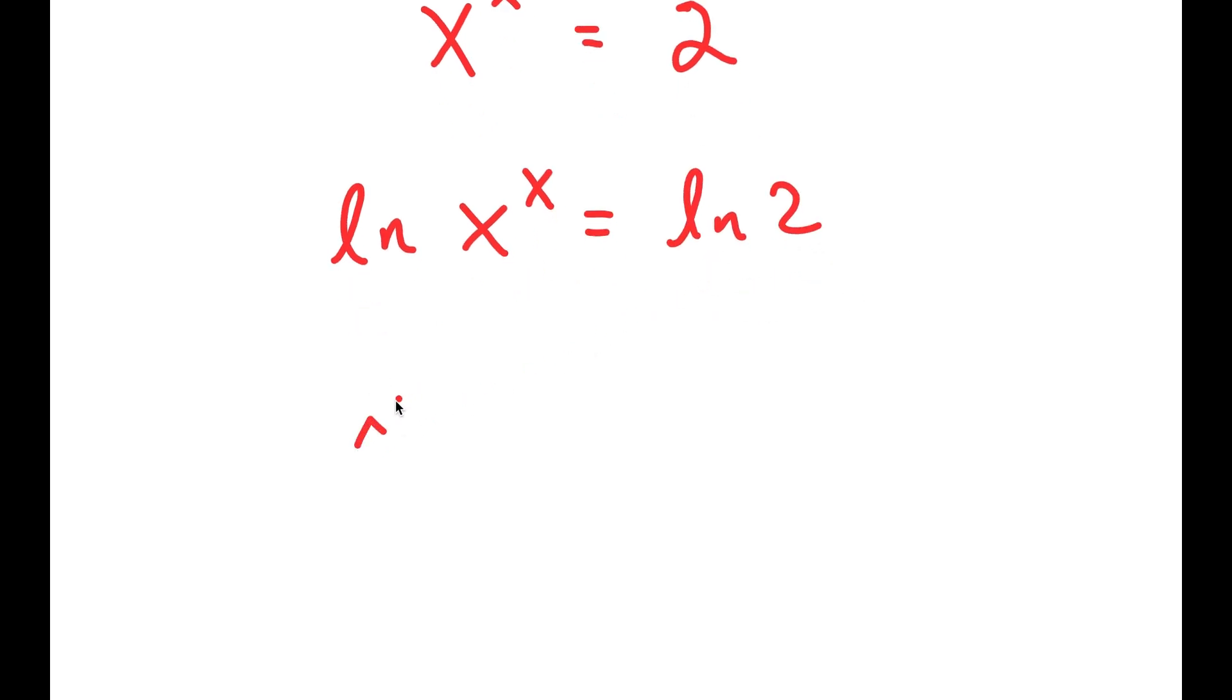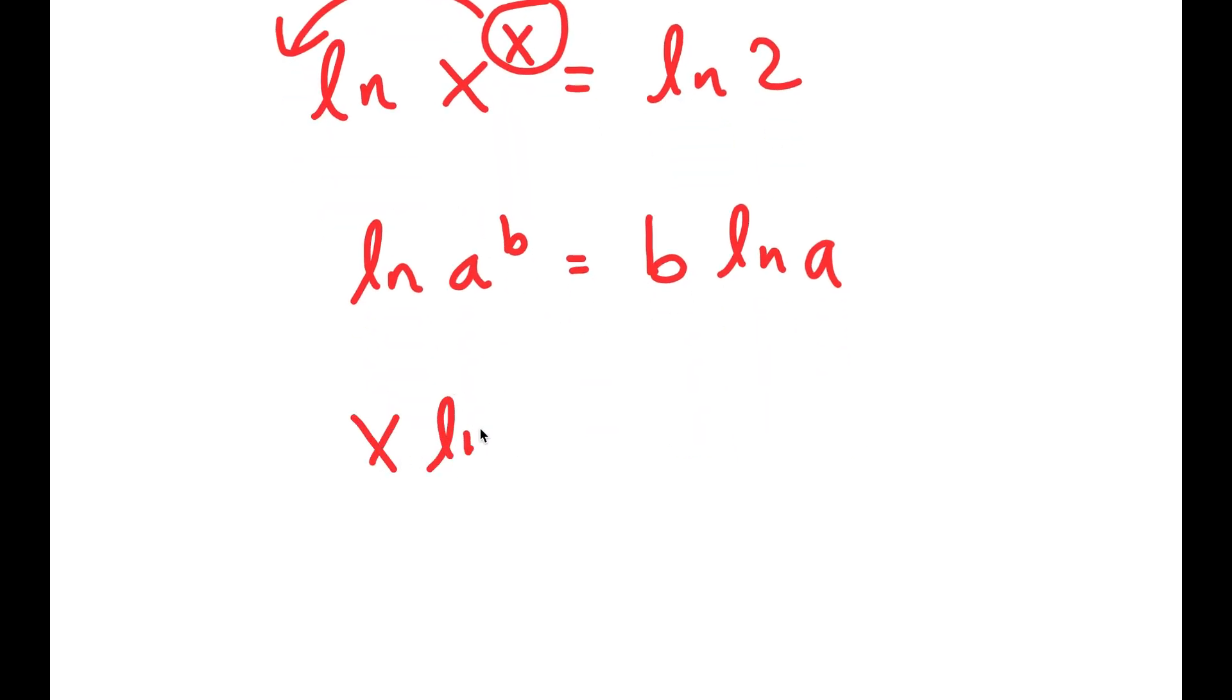Now, if I have something in the form ln a to the power of b, this is equal to b times ln a. So I have ln of x to the power of x, and I can move x to the front. So now I get x times ln x is equal to ln 2.